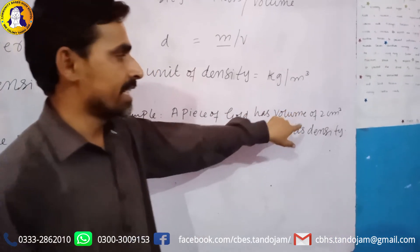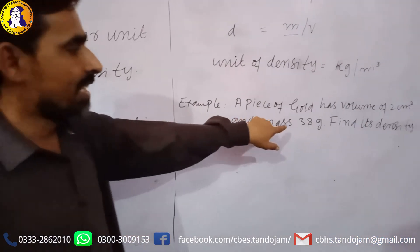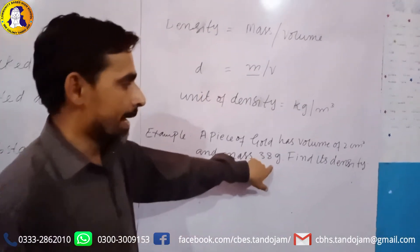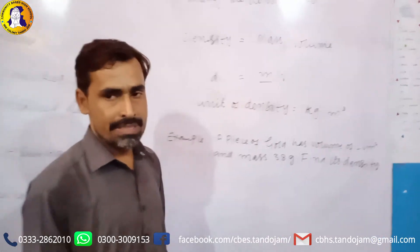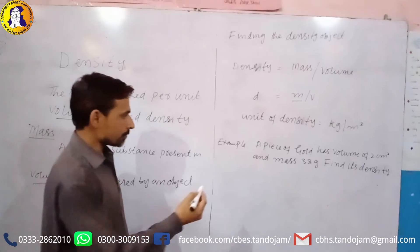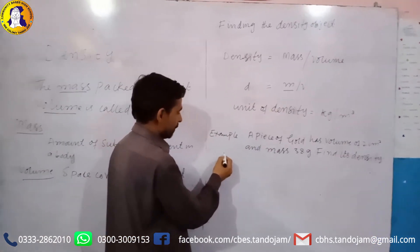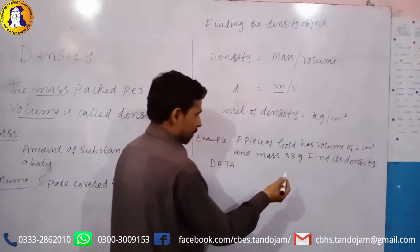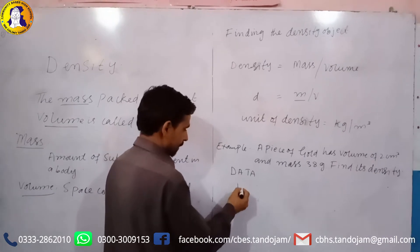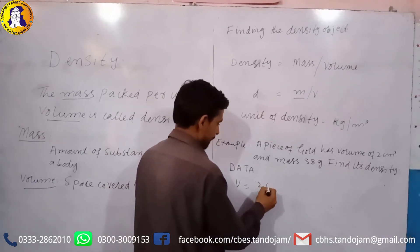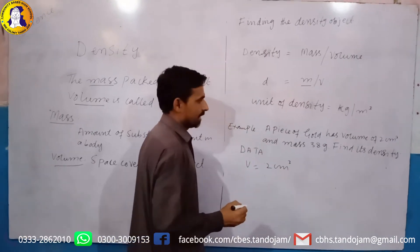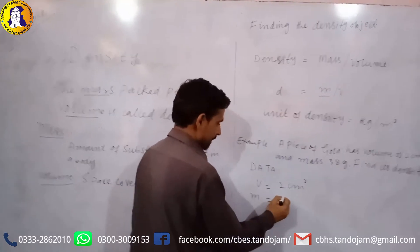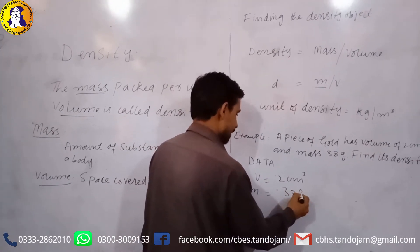An object has a volume of 2 cm cube and a mass of 38 g. We need to find its density. We are writing the given data: volume V is equal to 2 cm cube, and mass M is equal to 38 g. We are going to find density D.